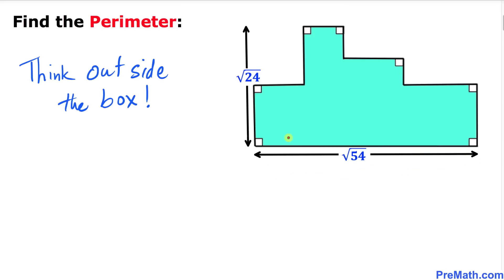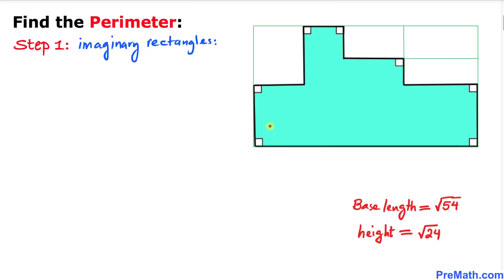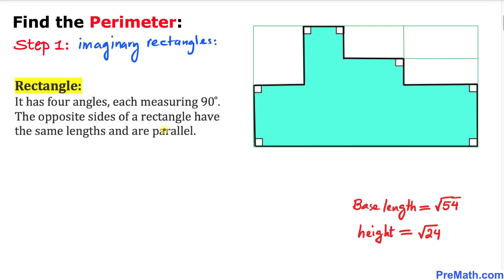We have to think outside the box. The good thing is that all these angles are 90 degrees — all right angles — and they are going to help us a lot. Our very first step is to create imaginary rectangles, as you can see here.